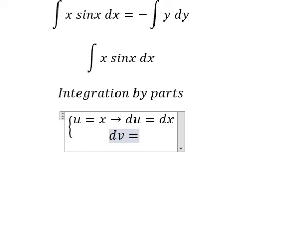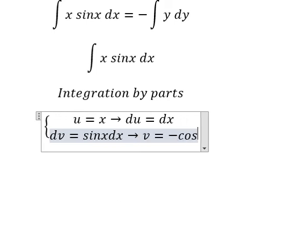And we put dv equal to sine x dx. The integration of this one, we have v equal to negative cosine x.